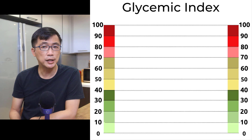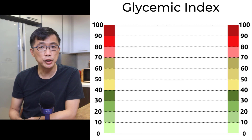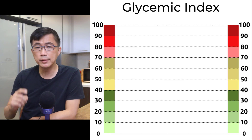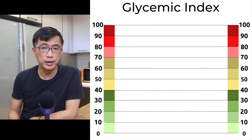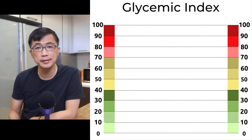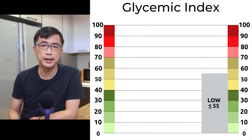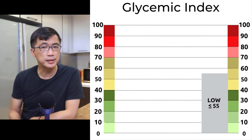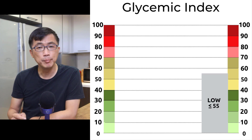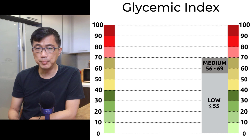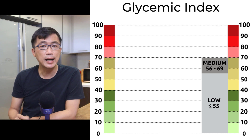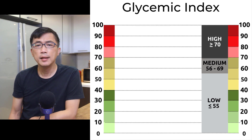Let's start. GI is a scale. Foods with GI of 1 to 55 are categorized as low GI. 56 to 69 is medium GI. 70 and above is high GI.